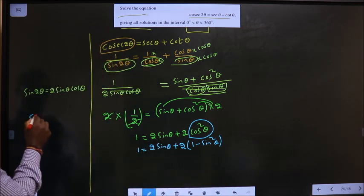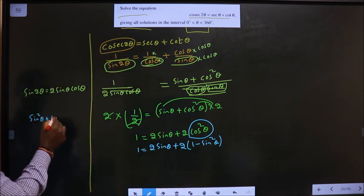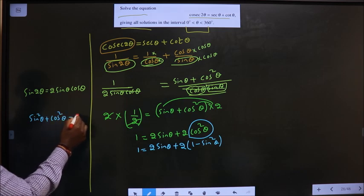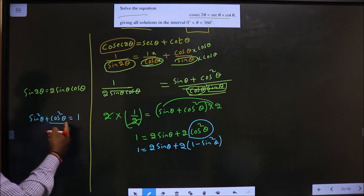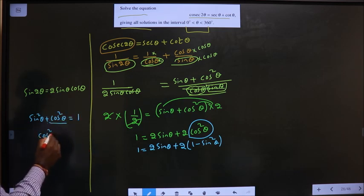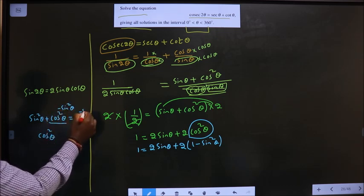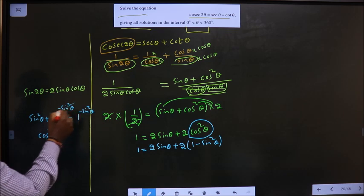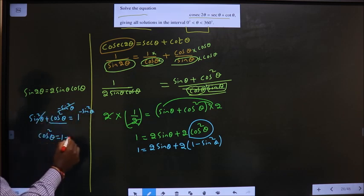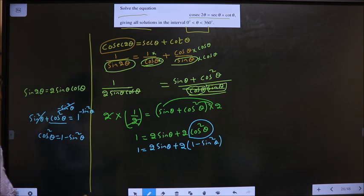How did it come? From basic trigonometry identity: sin square θ plus cos square θ equal to 1. You want to get cos square θ? So subtract sin square θ from both sides. This cancels out. We get cos square θ to be 1 minus sin square θ.